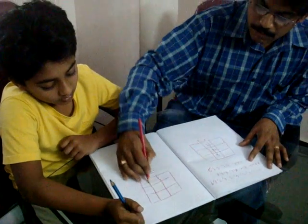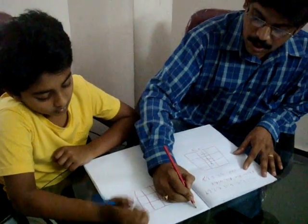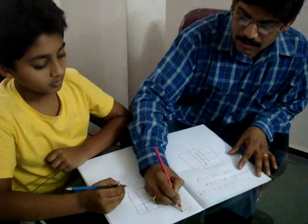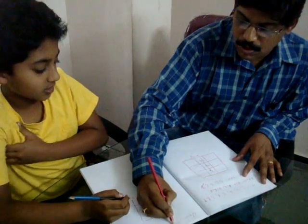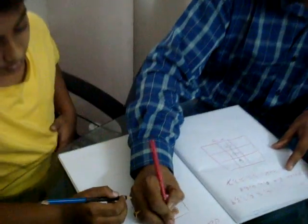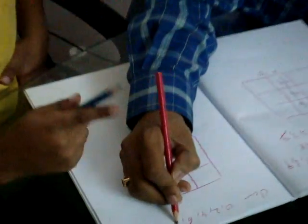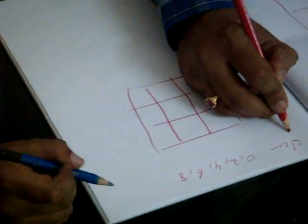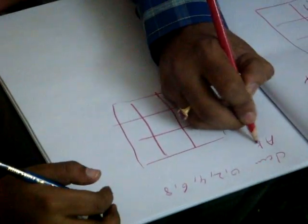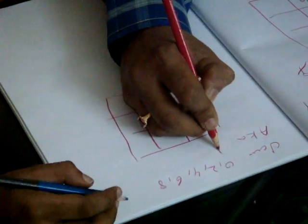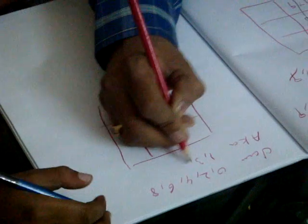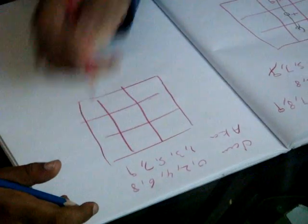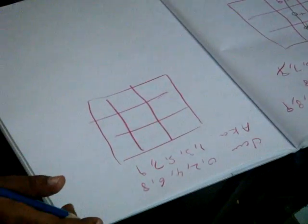Let us play fast. My numbers are even: 0, 2, 4, 6, 8. And Akash has: 1, 3, 5, 7, 9. Let us start the game.